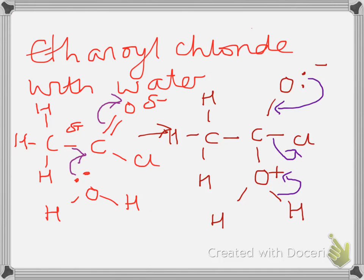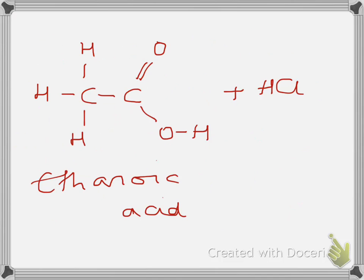So if I'm mixing ethanoyl chloride with water, it's the lone pair on the oxygen of the water molecule that attacks the electron-deficient carbon. And that causes repulsion of the electrons onto the oxygen. So you have an intermediate. The intermediate will have a negative charge on the oxygen and a positive charge on the lower oxygen. We're then using three curly arrows there to find the reaction going to completion. And it's going to make a carboxylic acid and HCl.